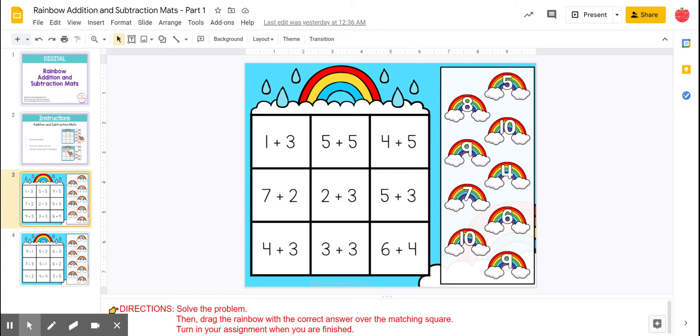So what you need to do is look at the problem inside of each box. Once you figure out what the answer is, you'll come over and find the rainbow with the correct answer number on it, and you'll drag it onto the top of the number sentence.